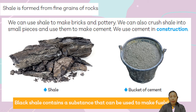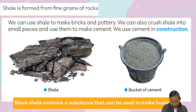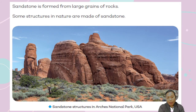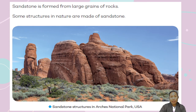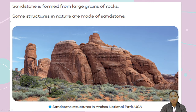This bucket of cement came from shale. Remember, when you want to make cement, you can use this kind of sedimentary rock. Another example of a sedimentary rock is sandstone. Sandstone is formed from large grains of rocks. Some structures in nature are made of sandstone.